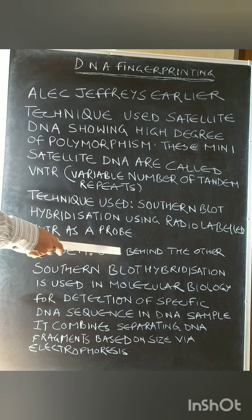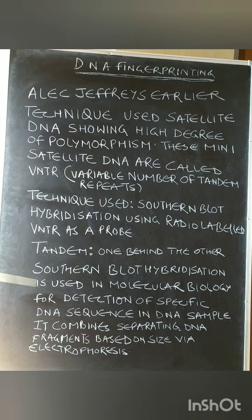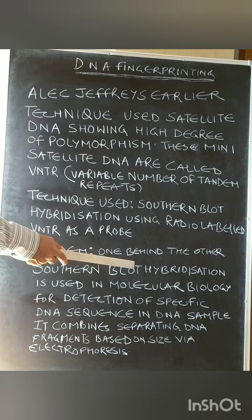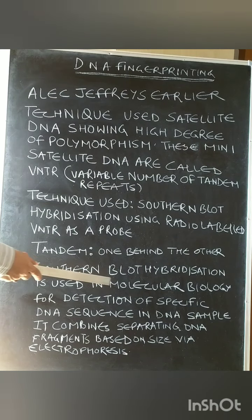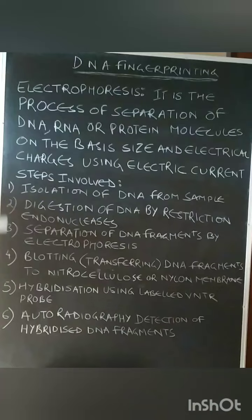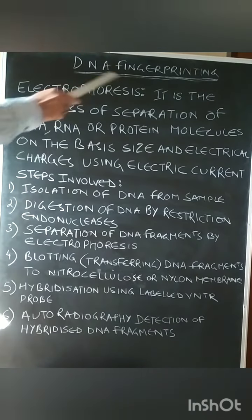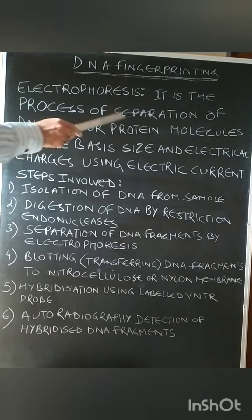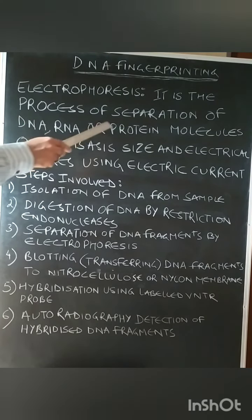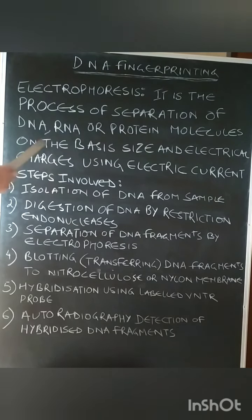Southern blot hybridization is used in molecular biology for detection of specific DNA sequences in a DNA sample. It combines separating DNA fragments based on size via electrophoresis, which is the process of separation of DNA, RNA, or protein molecules on the basis of size and electrical charge using an electric current.